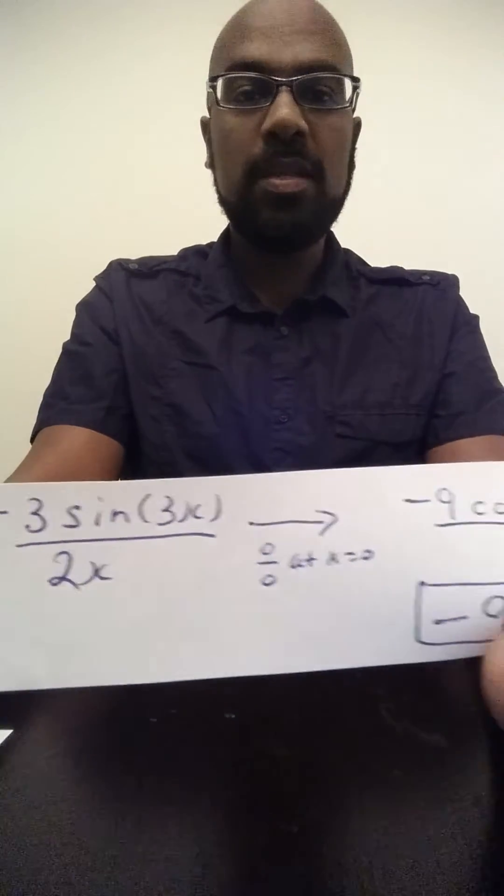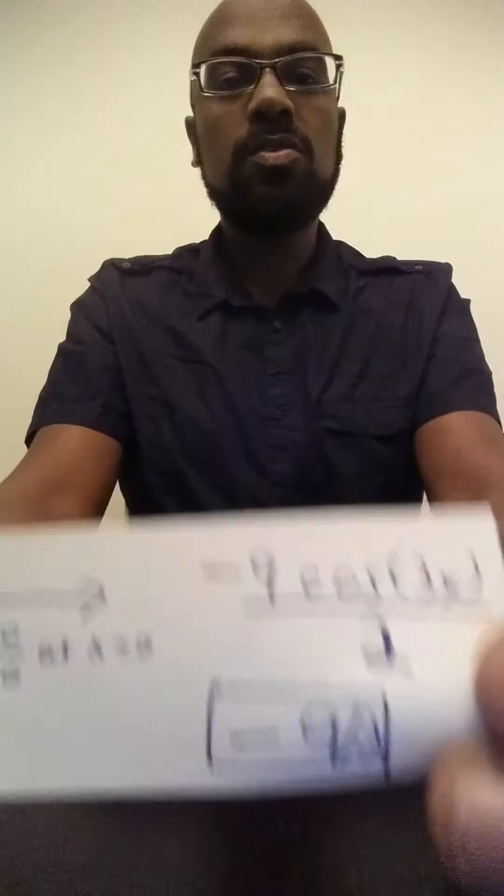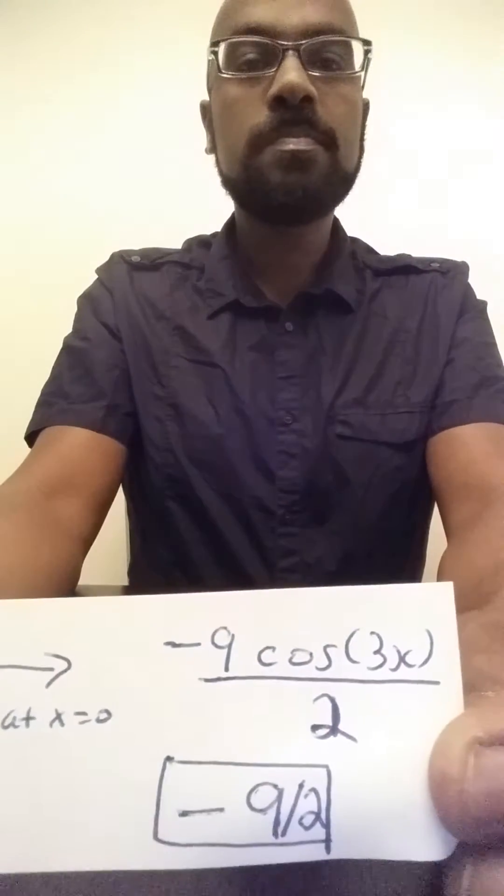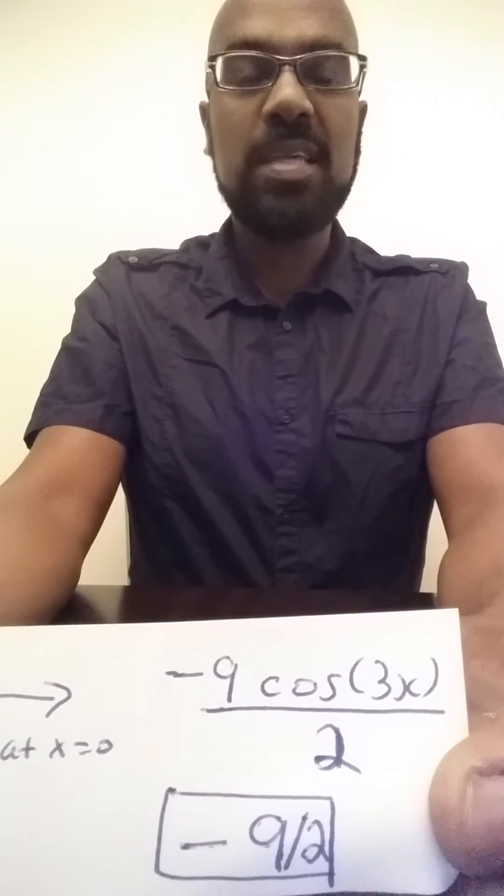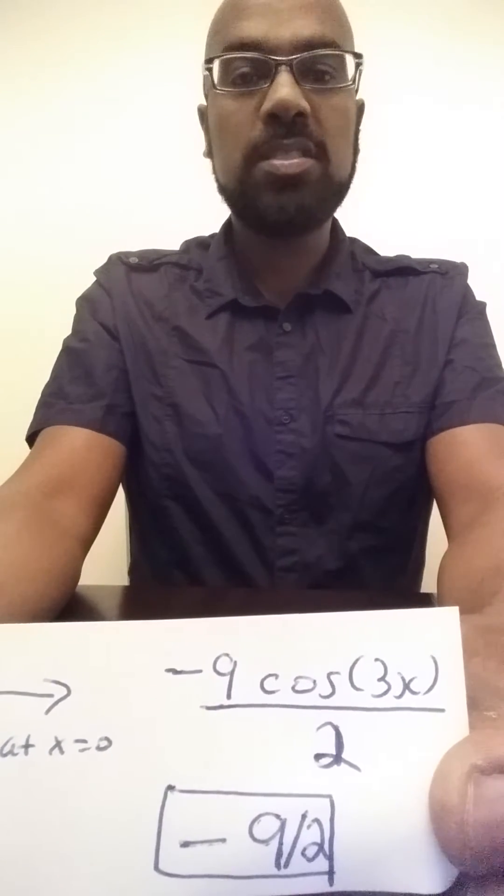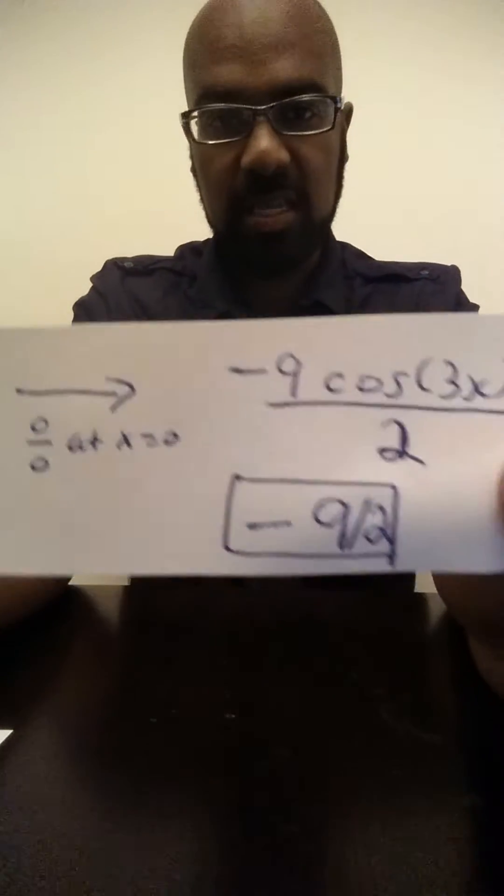If we do that, we'll end up with negative 9 cosine 3x divided by 2. The numerator is a constant, and as x goes to 0, cosine of 3x is 1, and so the answer is negative 9 halves.